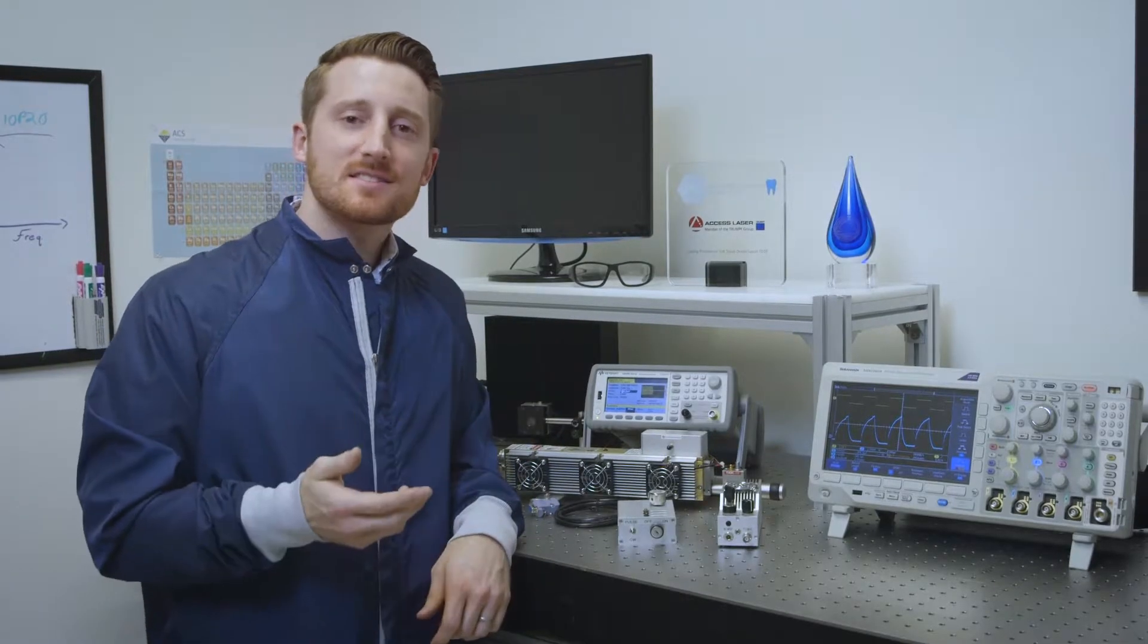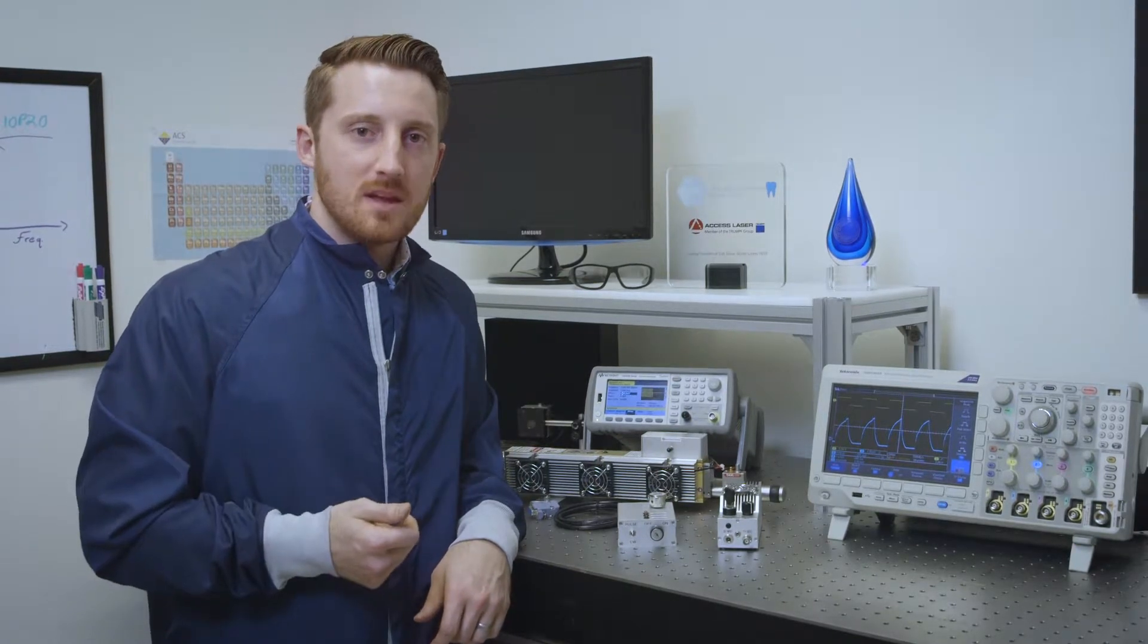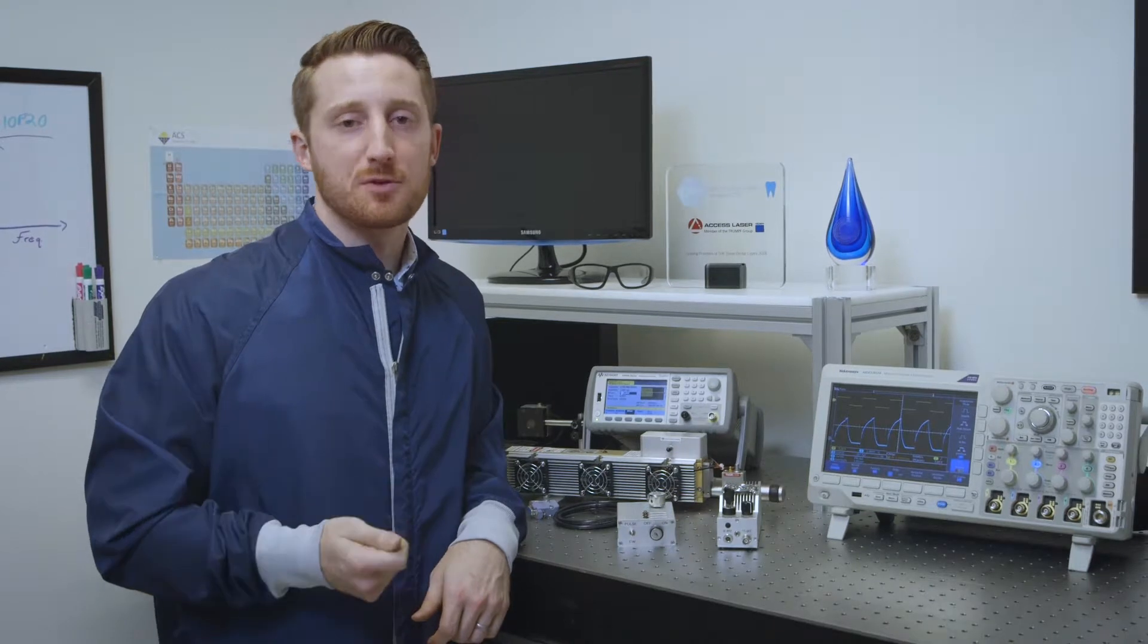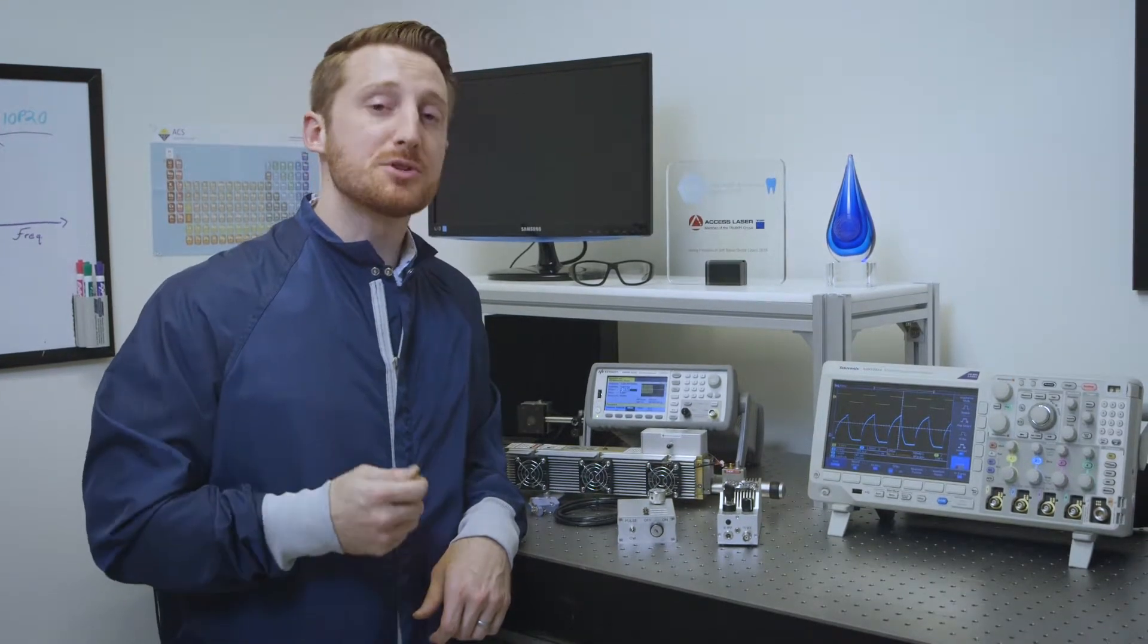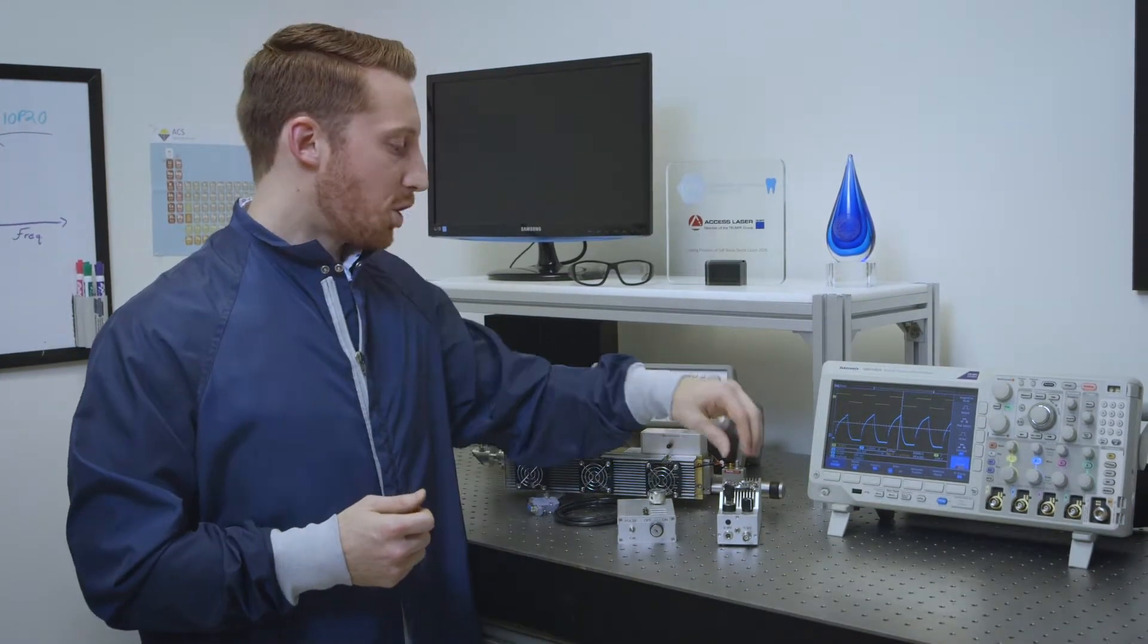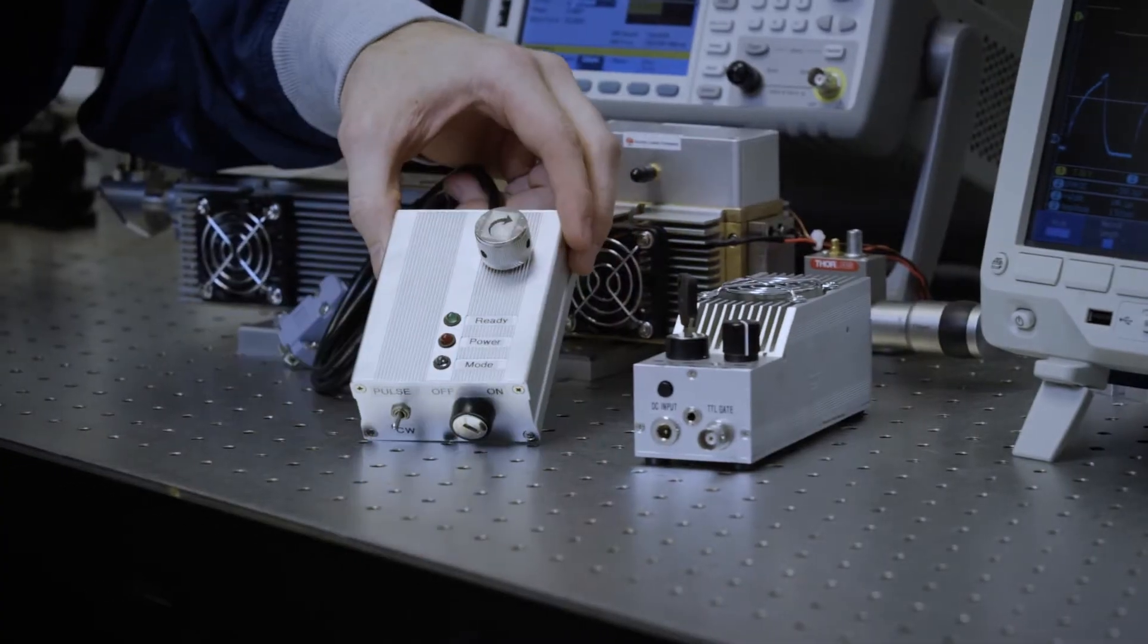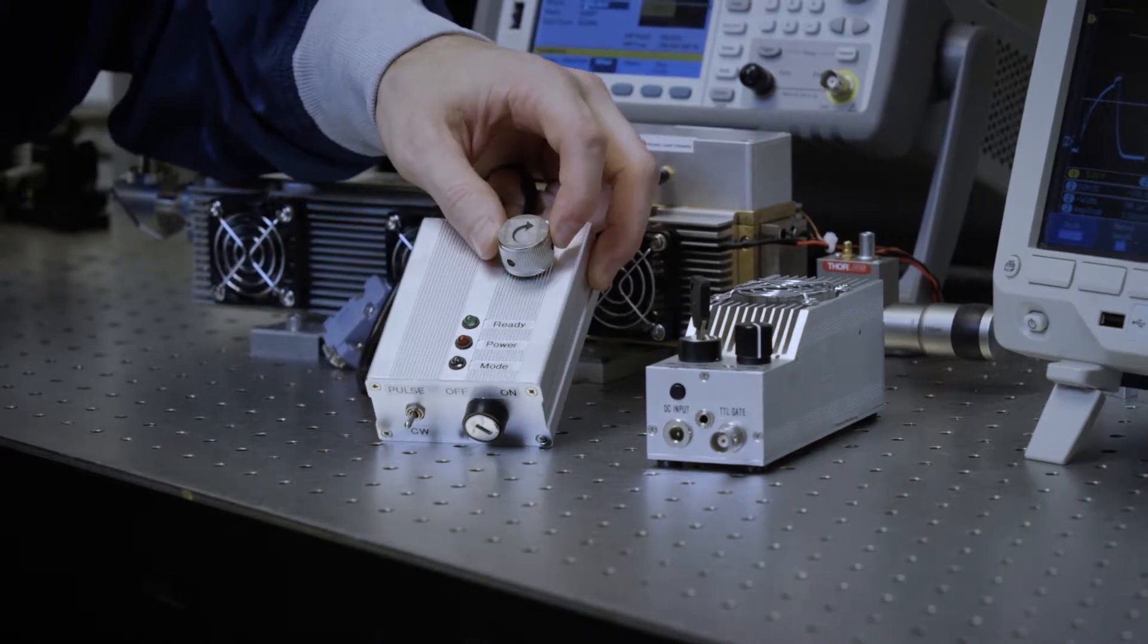The next is pulse width modulation. Now this can be done with a fixed pulse repetition frequency but a variable duty cycle using our RF4 and this knob or the LC3 controller where you use this one.